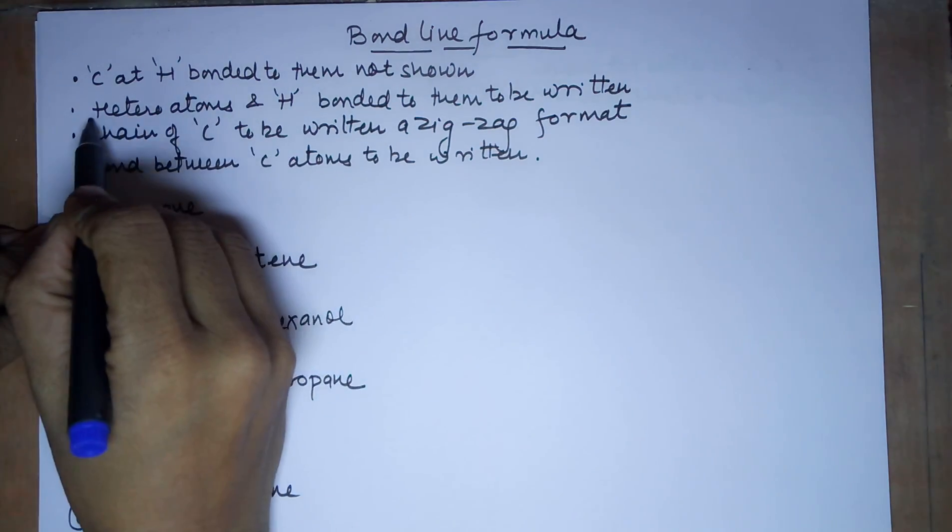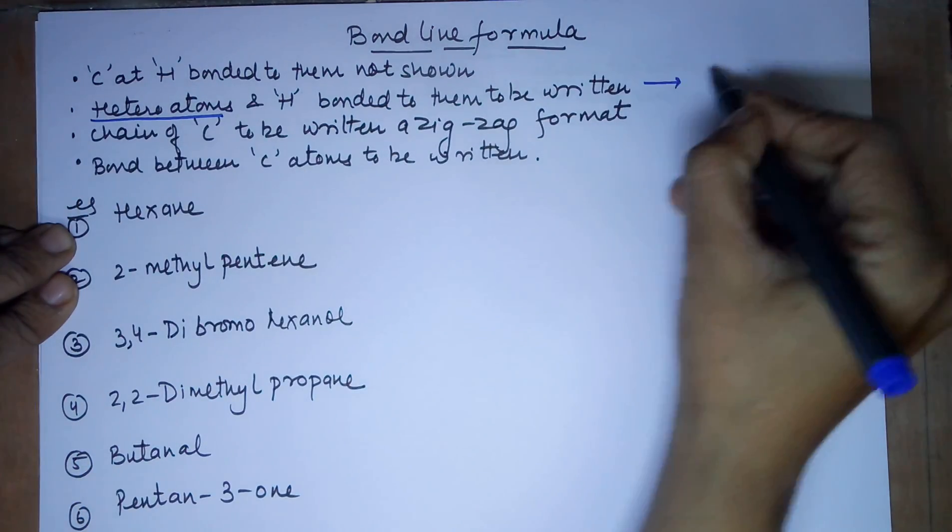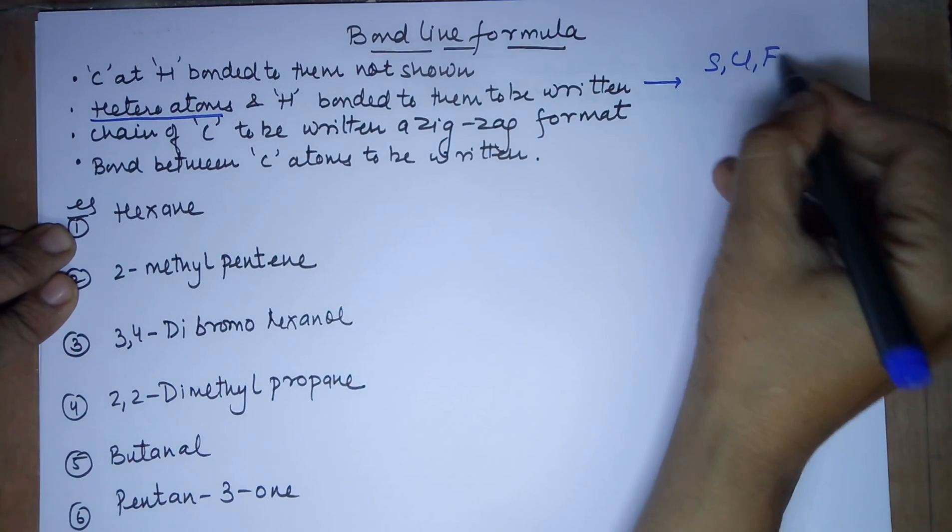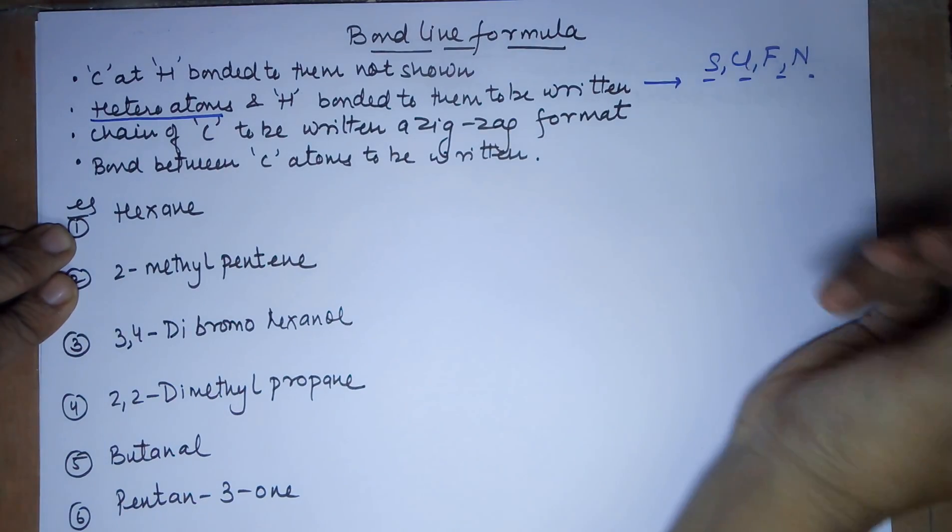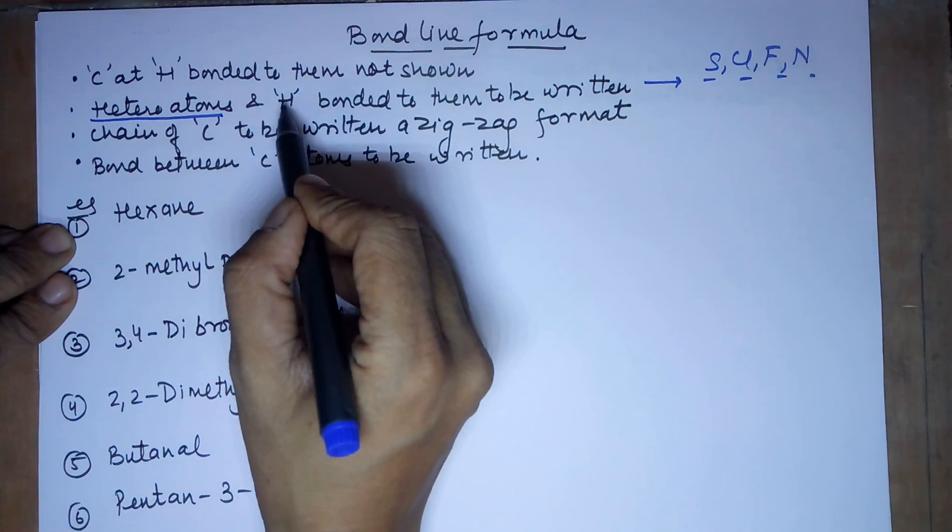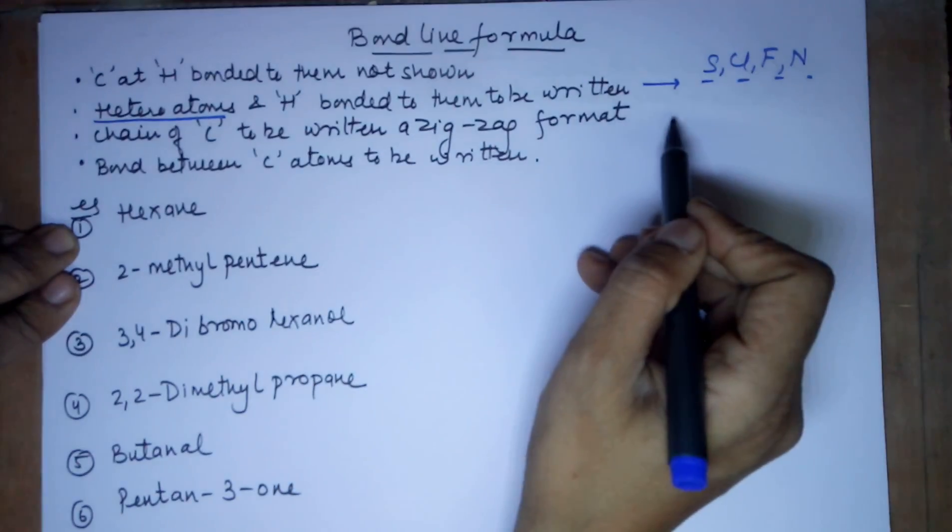Heteroatoms. Now, by the word heteroatoms, I mean something like sulfur, chlorine, fluorine, nitrogen, that is atoms other than carbon and hydrogen and the hydrogens which are bonded to them, if any, then they are to be shown.